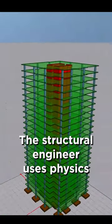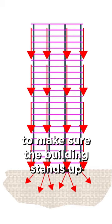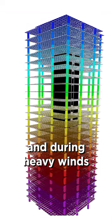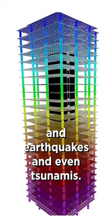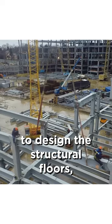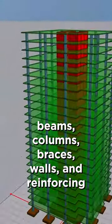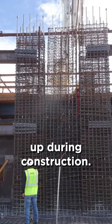The structural engineer uses physics and engineering principles to make sure the building stands up during construction by its own weight and during heavy winds and earthquakes and even tsunamis. They use their mastery of different building materials to design the structural floors, beams, columns, braces, walls and reinforcing, all the things that you see during construction.